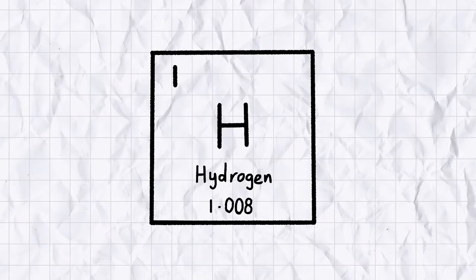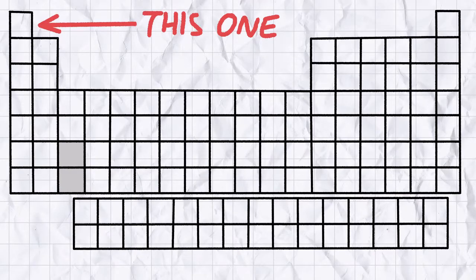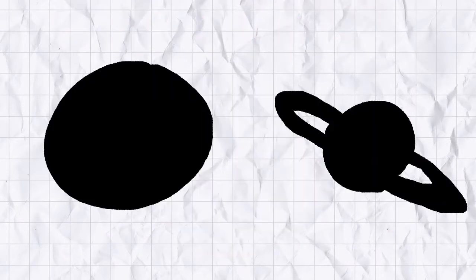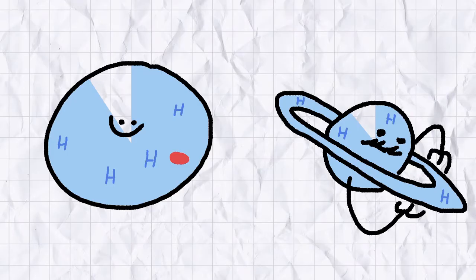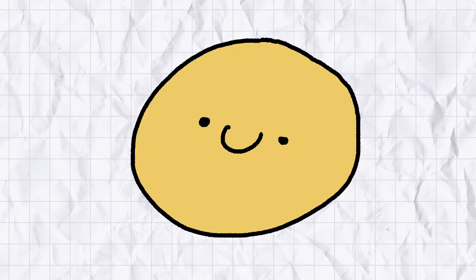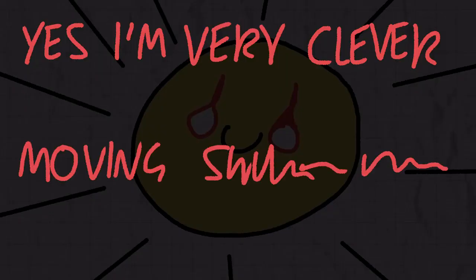Hydrogen is the simplest atom on the periodic table and accounts for more than 90% of all matter in existence. Planets like Jupiter and Saturn are full of the stuff, hence the name gas giant, but it's in stars that hydrogen really starts to shine. Yes, I'm very clever moving swiftly on.